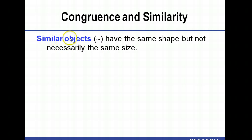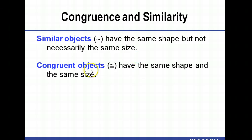So in general we say similar objects, and we use this little squiggle here, this tilde thing here. They have the same shape but not necessarily the same size. Versus congruent objects, which remember we use this notation for congruency. Yes, we've used this before. They have the same shape and the same size.